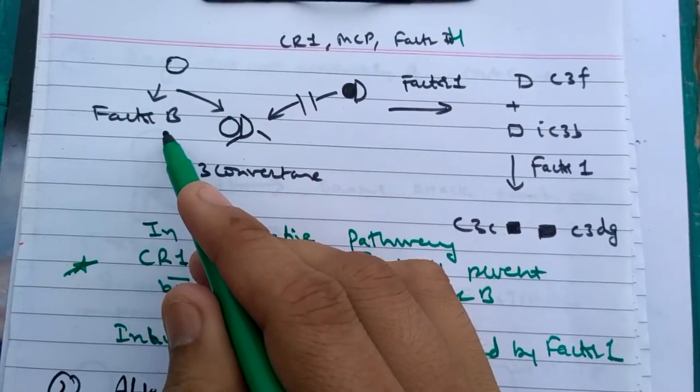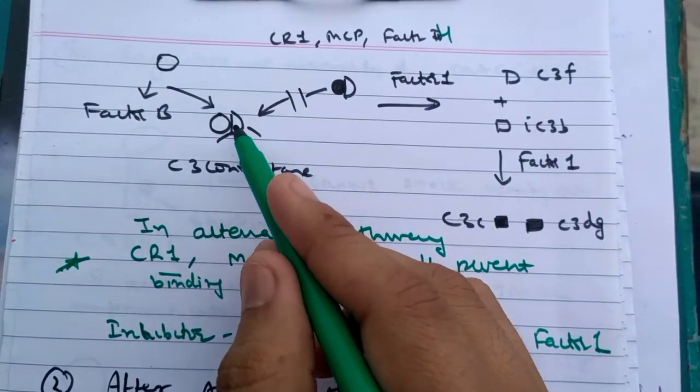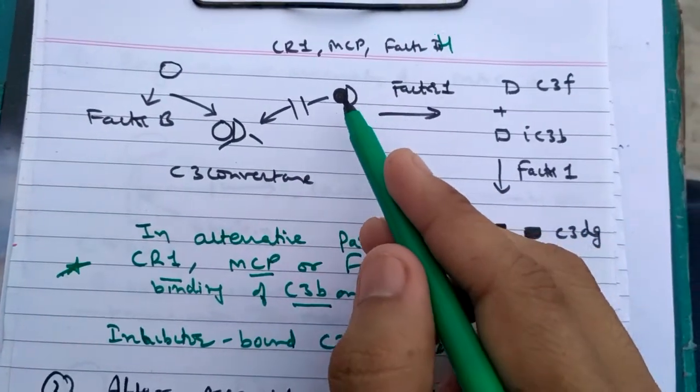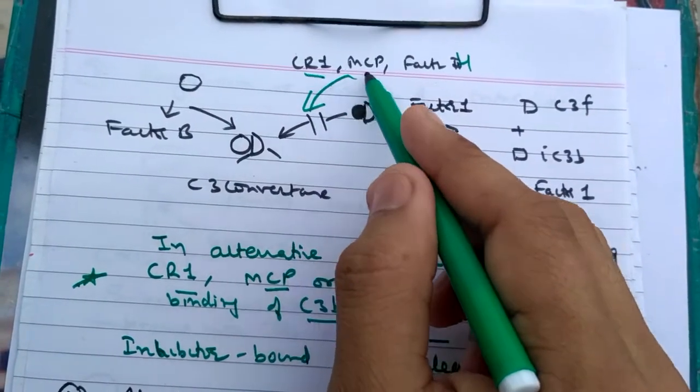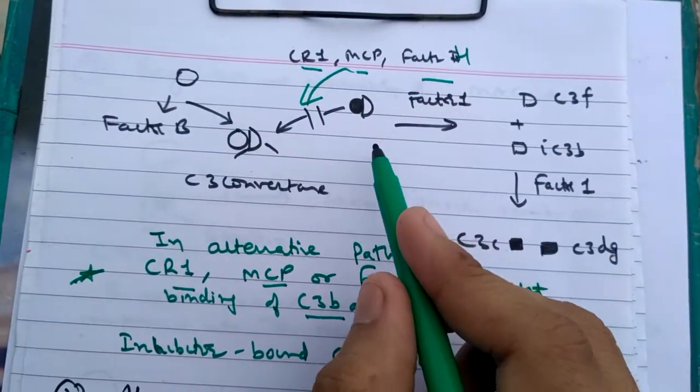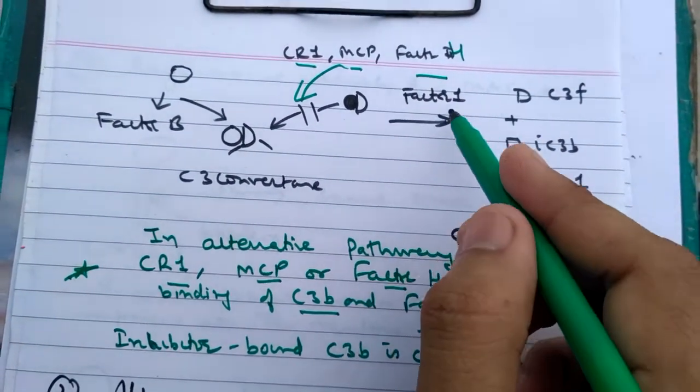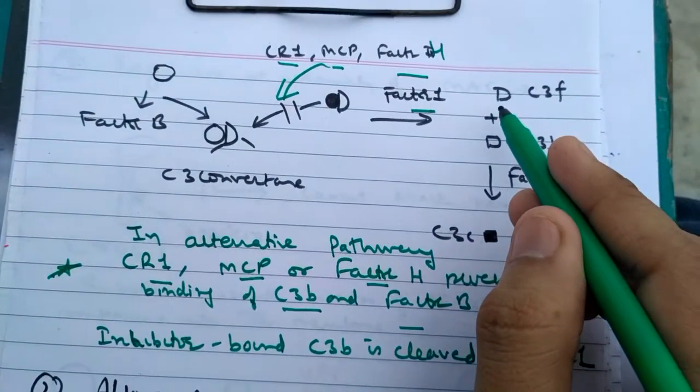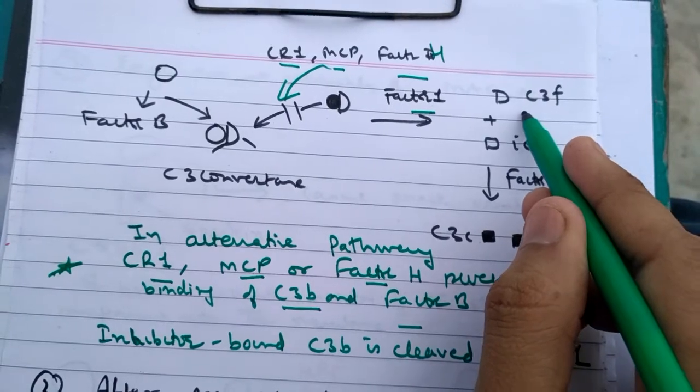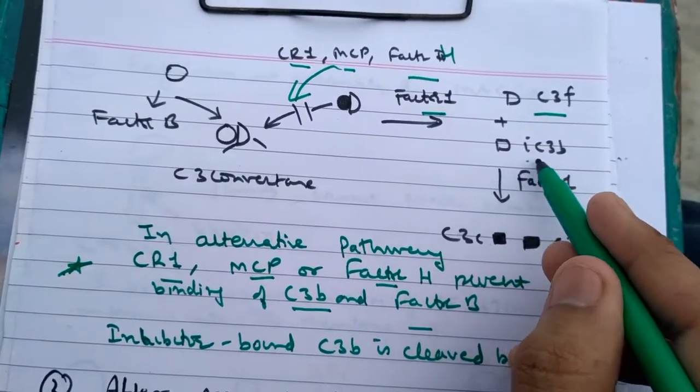So this is factor B binding with C3B. Here it is dissociated with the action of CR1, MCP, and factor H, and then further factor 1 breaks them into C3F and inhibitory C3B.